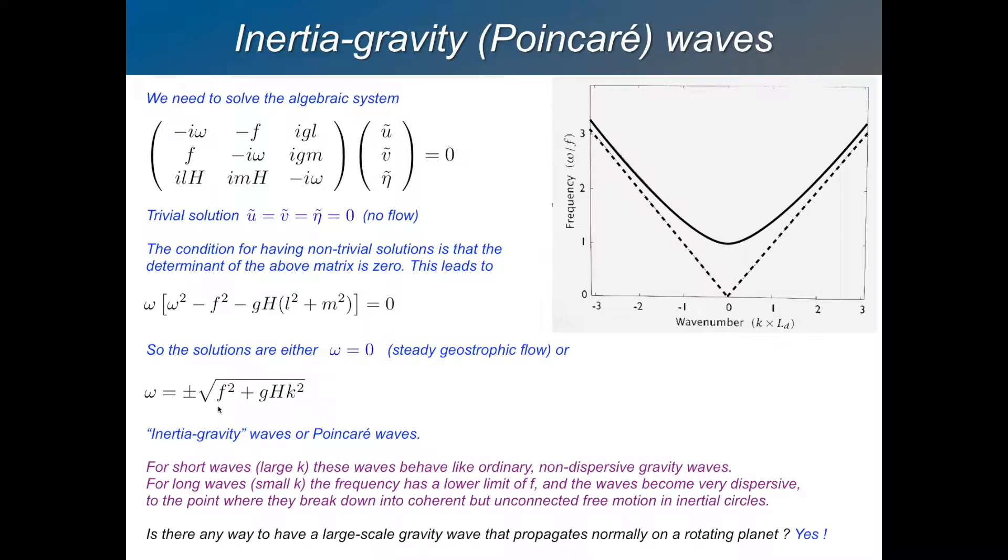But the fact that this f squared is there now under the square root, that means that the relationship between omega and k is not linear anymore. And it's plotted here. So if wave number is positive, we say we're propagating in the positive direction. If it's negative, we're propagating in the opposite direction. And this is frequency in the vertical axis. And these dashed lines are just non-dispersive gravity waves without rotation. And if you add rotation,